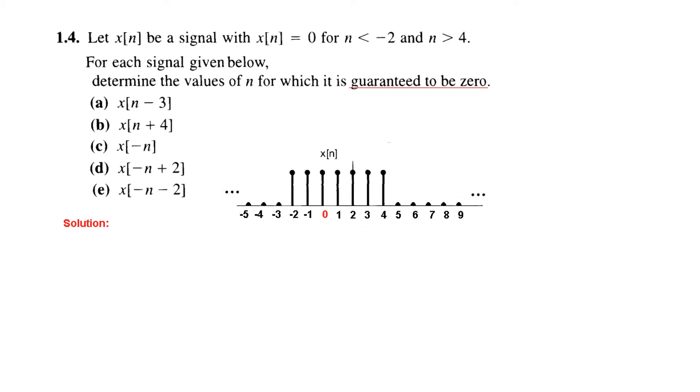Now we come to part A of the question. For our ease we will put a hat mark on the signal which is at 0. n is equal to 0. We will put a hat mark so we know where the signal is going.